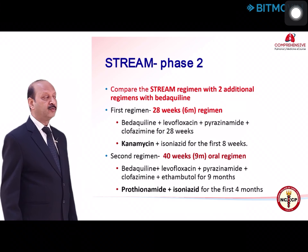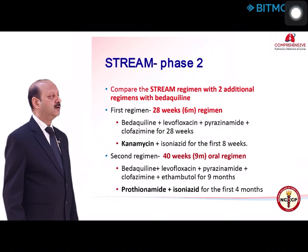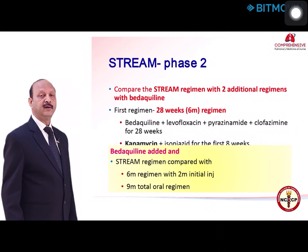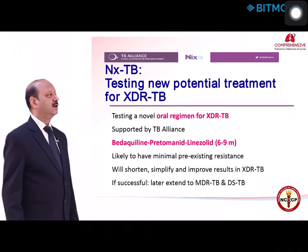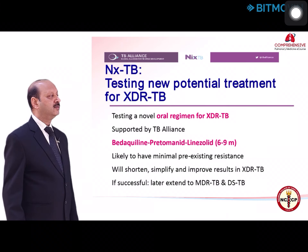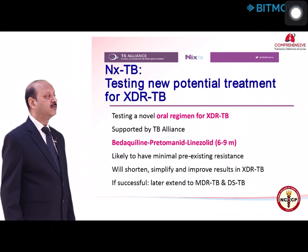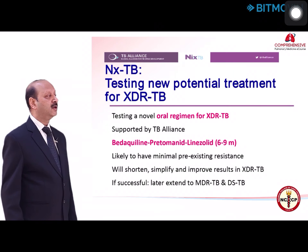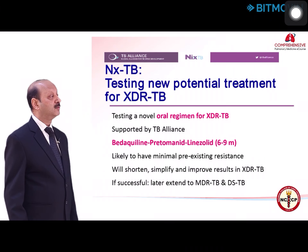STREAM phase 2 has also been planned with two additional regimens including bedaquiline. One arm compares the STREAM regimen with a 6-month regimen with 2 months of initial injections, and another arm includes a totally oral 9-month regimen with bedaquiline. Additionally, a trial for an oral regimen using bedaquiline, pretomanid, and linezolid for 6 to 9 months is being tried first in XDR tuberculosis, with all three drugs expected to have lower resistance rates; if successful it will be extended to MDR and drug-resistant tuberculosis.